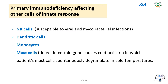Primary immunodeficiency affecting other cells of the innate response includes NK cell deficiency, leading to susceptibility to viral and mycobacterial infections, as well as defects in dendritic cells, monocytes, and mast cells. A defect in a certain gene causes cold urticaria, in which mast cells spontaneously degranulate at cold temperatures.